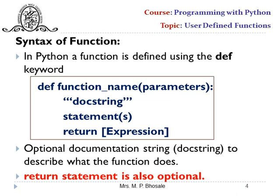As per our requirement, we can pass parameters to the function. The colon indicates the end of the function header and the start of the function body. When you press Enter after the colon, Python automatically provides indentation, starting the function block. You can write the purpose of the function as a doc string in triple or double quotes, which is optional. After that, you write the executable statements, and optionally a return statement.